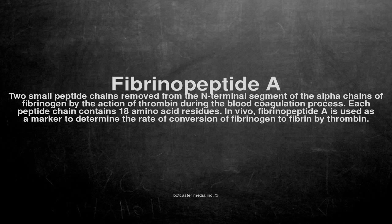Fibrinopeptide A. Two small peptide chains removed from the N-terminal segment of the alpha chains of fibrinogen by the action of thrombin during the blood coagulation process. Each peptide chain contains 18 amino acid residues. In vivo, fibrinopeptide A is used as a marker to determine the rate of conversion of fibrinogen to fibrin by thrombin.